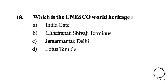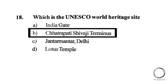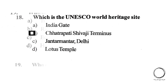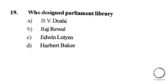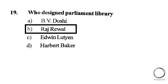Next question: Which is a UNESCO World Heritage Site? A) India Gate, B) Chhatrapati Shivaji Terminus, C) Jantar Mantar Delhi, D) Lotus Temple. The answer is B) Chhatrapati Shivaji Terminus. Next question: Who designed the Parliament Library? A) B.V. Doshi, B) Raj Rewal, C) Herbert Baker. The answer is B) Raj Rewal.